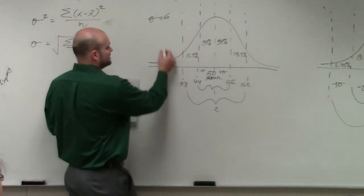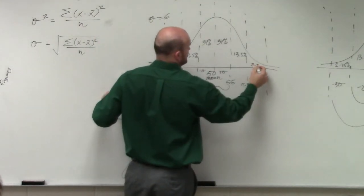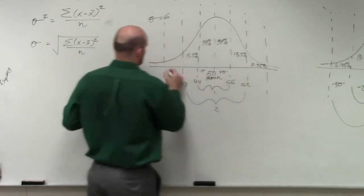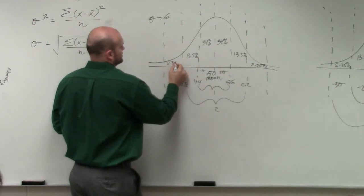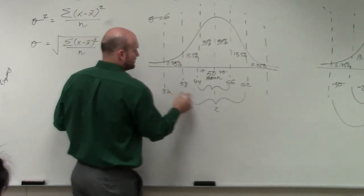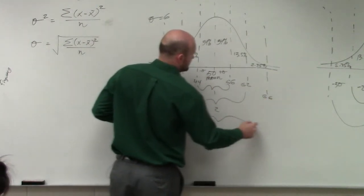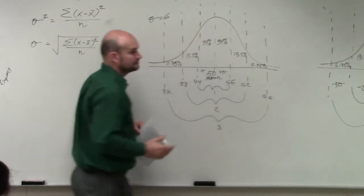And then the last one is the third deviation, which you know is 2.35%. And you will need to know these percentages. So if I subtract again, that's going to be 32. And that will be 66. And that's three deviations.